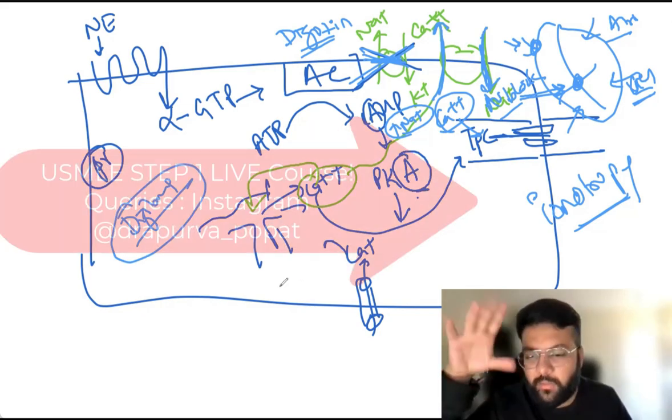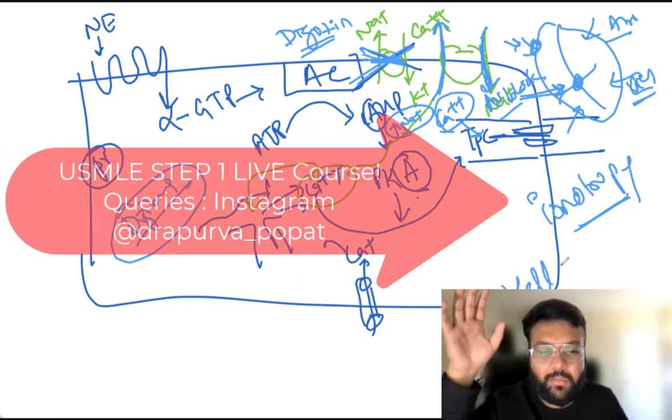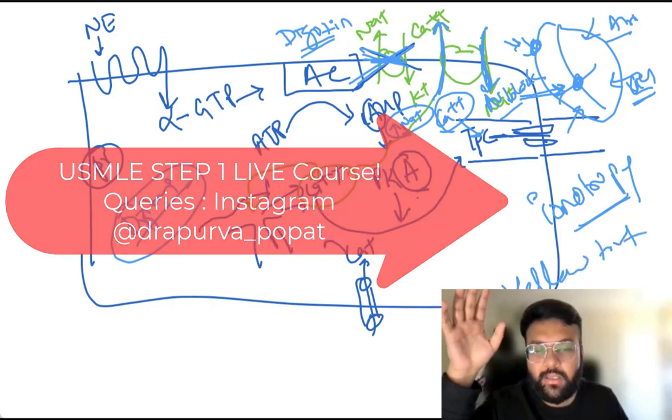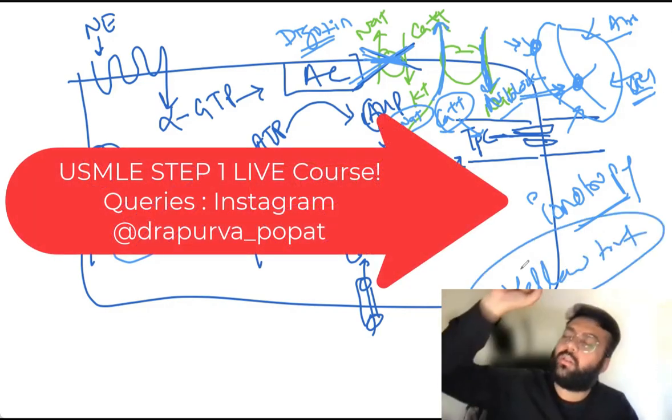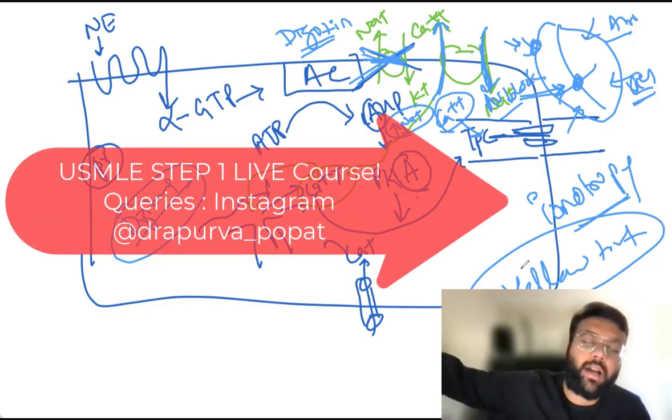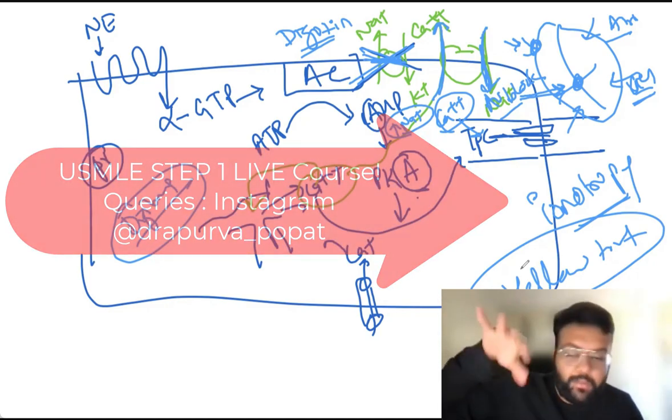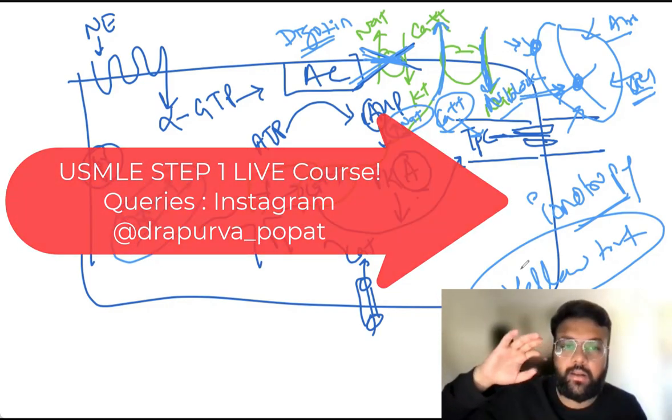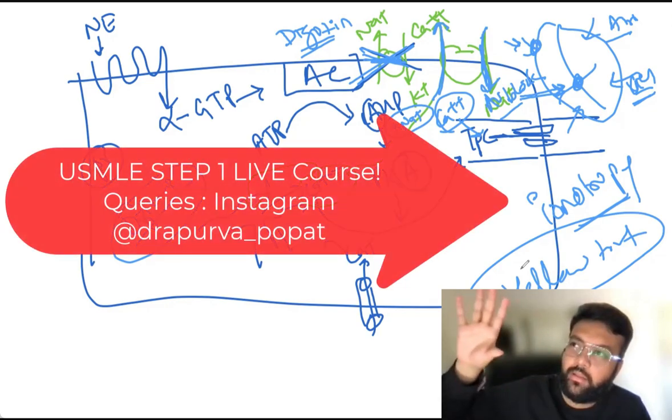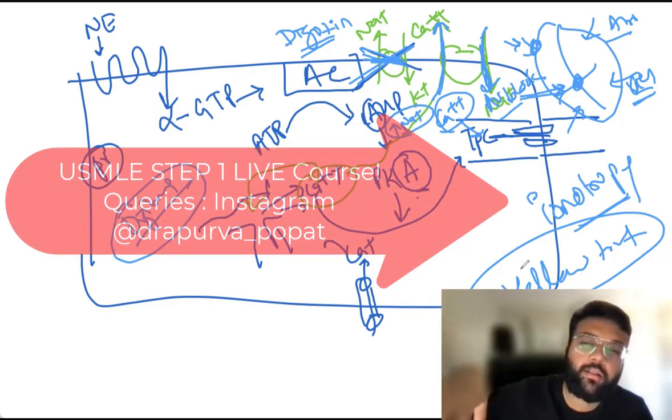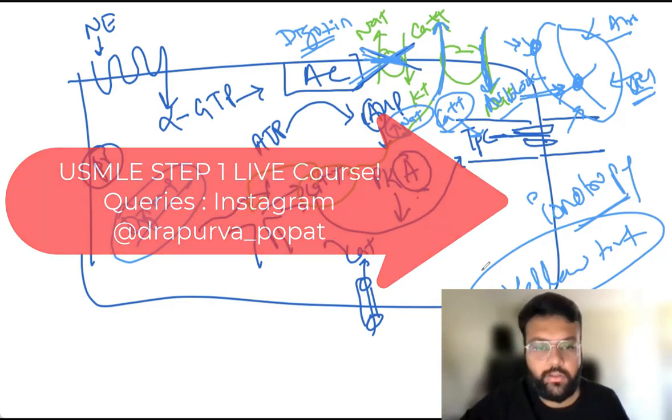The other thing is, it can also cause some colorblind, not colorblind, but yellow tint in vision. This is how they'll ask in the questions. Patient was already having heart failure and now he is complaining of yellow tint in color vision and having tachyarrhythmias of the atria and ventricle with heart blocks. It's digoxin toxicity.